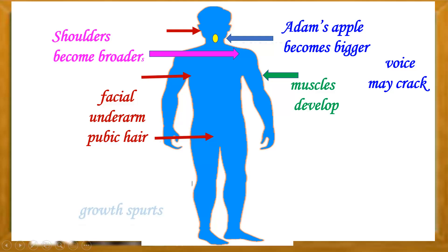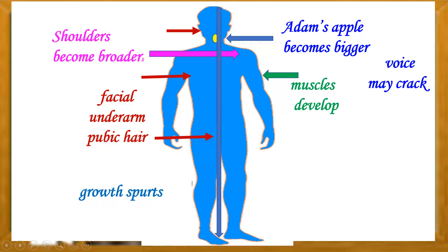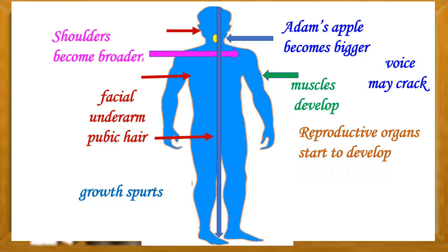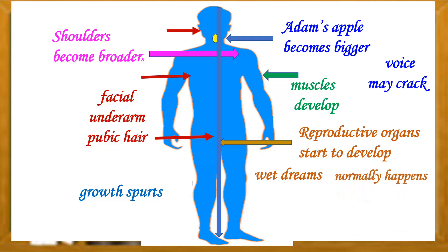At this stage, boys experience growth spurts and grow faster. The reproductive organs start to develop — the penis and testes grow and start producing sperm cells. Boys will also experience discharge of semen during sleep, commonly called a wet dream. This normally happens to all boys at this age.